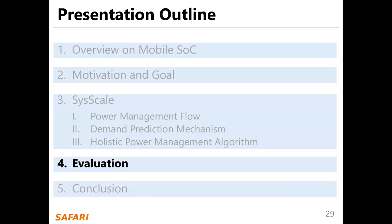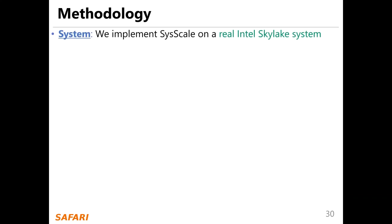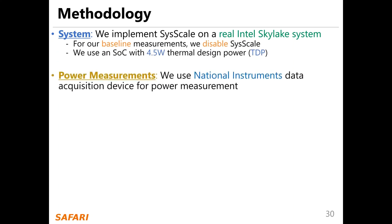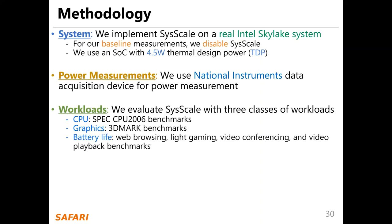I will next present our evaluation of C-Scale. We implement C-Scale on a ready-entry Skylake system. For our baseline measurements, we disable C-Scale. We use a SoC with 4.5 watt thermal design power and a National Instruments data acquisition device for measurements. We evaluate C-Scale with three classes of workloads: for CPU, we use SPEC CPU 2006 benchmarks; for graphics, we use 3DMark benchmarks; and for battery life, we use web browsing, live gaming, video conferencing, and video playback benchmarks.